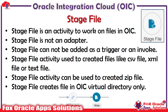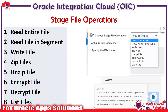With stage file operation in Oracle Integration, we can perform eight different types of operations: read entire file, read file in segment, write file, zip file, unzip file, encrypt file, decrypt file, and list file. The zip file operation is especially useful when uploading a zip file to a UCM server. The list file operation gives you a list of files available in a specific directory matching a file pattern.